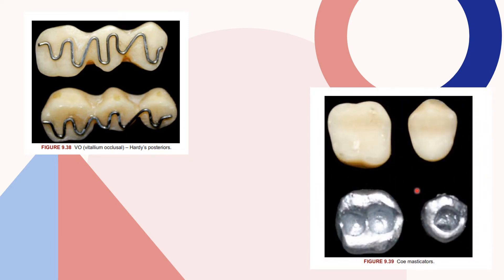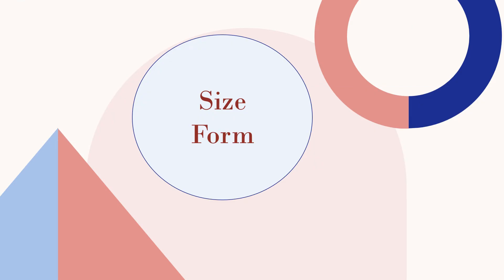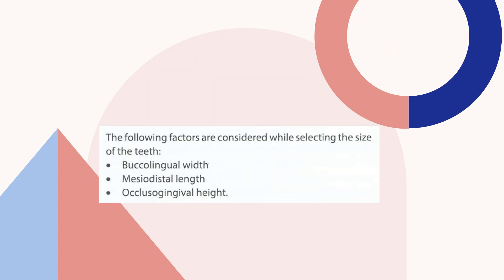These are the Koi masticators, teeth designed by Cook. Here the mandibular second premolar and first molar wear flat stainless steel castings with diagonal holes on the occlusal surface that slot together. So the selection of posterior teeth is based on size of the teeth and form of the teeth. The factors considered while selecting the size of the teeth are buccolingual width, mesiodistal length, and occlusal-gingival height.